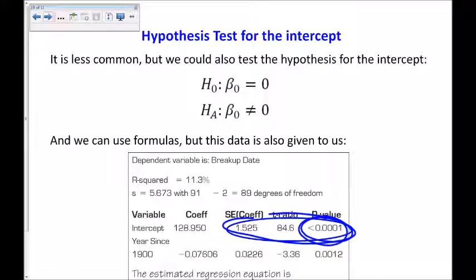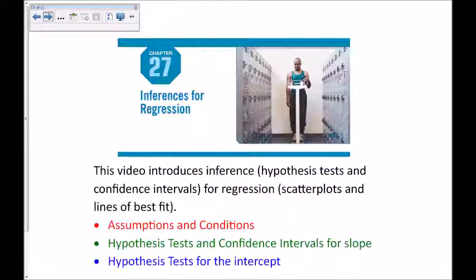And this is the p-value. Testing, could the y-intercept be zero? Again, here, the p-value is low, so we'd reject the null hypothesis and conclude that the y-intercept is not zero.